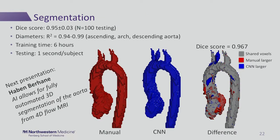The last step is segmentation. We have a dice score of 0.95 on average for the 100 testing subjects. If we measure diameters in the ascending arch and descending aorta, we find very good correlation whether we measure on either the manual or the CNN-derived segmentations. Training time is around 6 hours and testing takes about 1 second per subject.